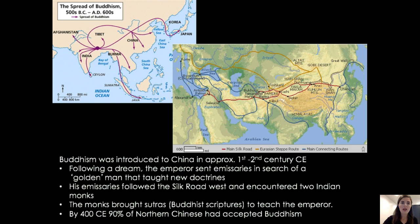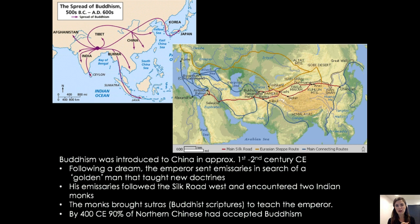Thinking about China and how Buddhism was established, it's important to consider how Buddhism becomes accepted into Chinese culture, given the very dominant philosophies of Taoism and Confucianism already present. Buddhism was introduced in China in approximately the first to second century CE. Legend has it that it was in 70 CE, but it's probably more of a rough date in that range. It was said that following a dream, the Emperor sent emissaries in search of a golden man who taught new doctrines.